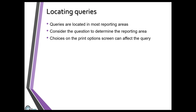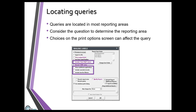When thinking about your reporting area, think about your question. For example, 'how many people registered in a Spanish class last year?' We look at keywords like 'registered,' so we're probably going to go to a registration reporting area. Always remember that print options on your report screen can and will affect the query — things like excluding don't-mail names, waitlisted registrations, cancelled records, and inactive names.